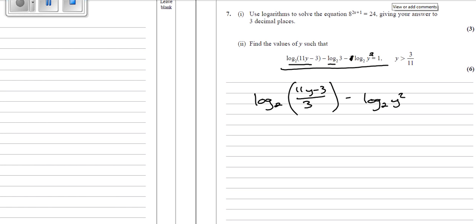We've got another log there, so another take away equals 1. Because we've got log take away another log, the y² goes underneath as well. So it's log base 2 of (11y − 3) / (3y²) = 1.